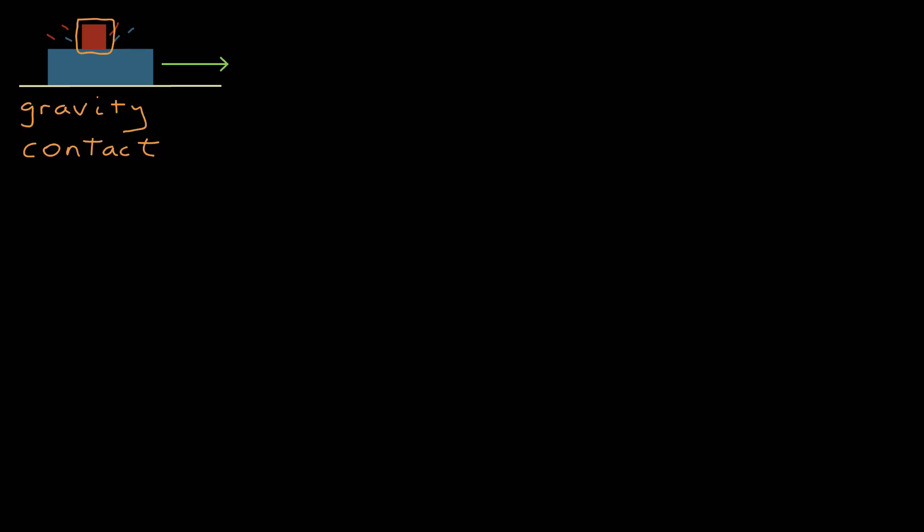I'm going to start by looking at the red object. I'm probably going to have to look at both, but I'll start here. What are the forces acting on this object? There's gravity, of course. And if I draw a line around my object, the only other agent that crosses that line is the blue block. So there's a contact force between the blue block and red.